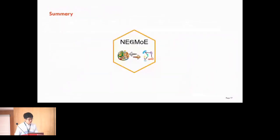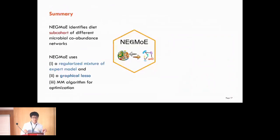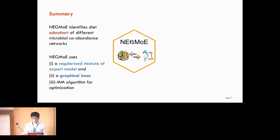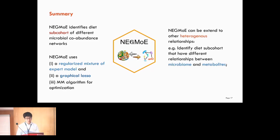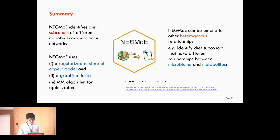In summary, we propose NIGMO, a new method aimed at identifying sub-cohorts with different microbial correlation co-abundance networks, where each group has its own co-abundance network. It uses a mixture of expert model with a graphical lasso and an MM algorithm for optimization. We also point out that the NIGMO model can be extended to other heterogeneous relationships — for example, to identify sub-cohorts with different microbiome–metabolite relationships by simply changing the input and output. The package is now available on GitHub.